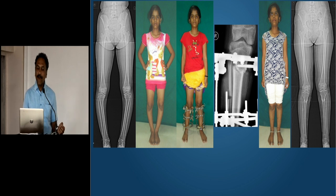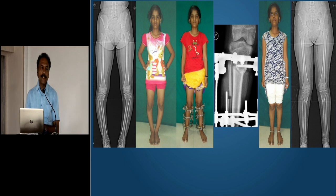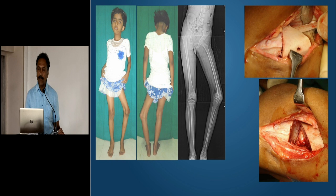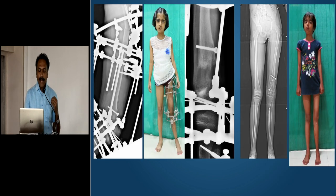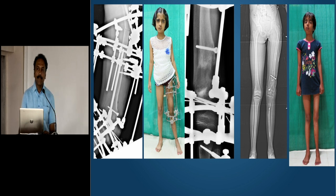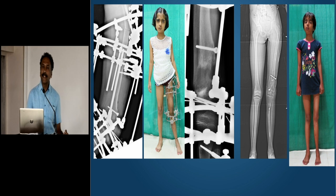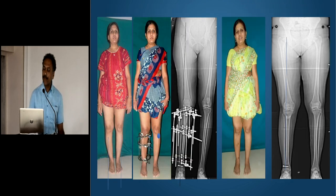For varus deformities in children, you don't need expensive jigs — the Elizarov fixator is the ultimate jig. You can angulate and translate, correct the deformities. For growth arrest with severe varus, you need to resect the fascial bar: remove a triangle of bone, get down to the fascial bar, resect it, apply the Elizarov fixator, and through the osteotomy site perform lengthening — also through a site above — to achieve the desired result along with over-correction and over-lengthening to compensate for future deformity and shortening.